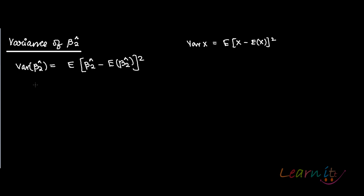Now, remember that we have already proved that E of beta 2 hat is equal to beta 2 — that is, beta 2 hat is an unbiased estimator of beta 2. So you can write variance of beta 2 hat as E of beta 2 hat minus beta 2, in place of E of beta 2 hat, because of the unbiasedness of beta 2 hat.